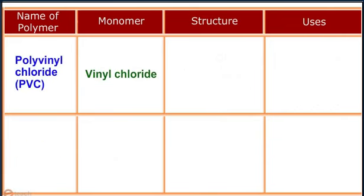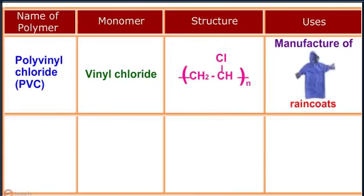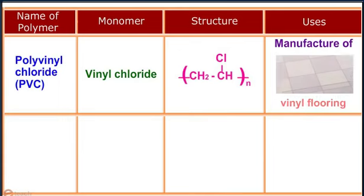Polyvinyl chloride: the monomer is vinyl chloride. It is used in the manufacture of water pipes, raincoats, handbags, etc.